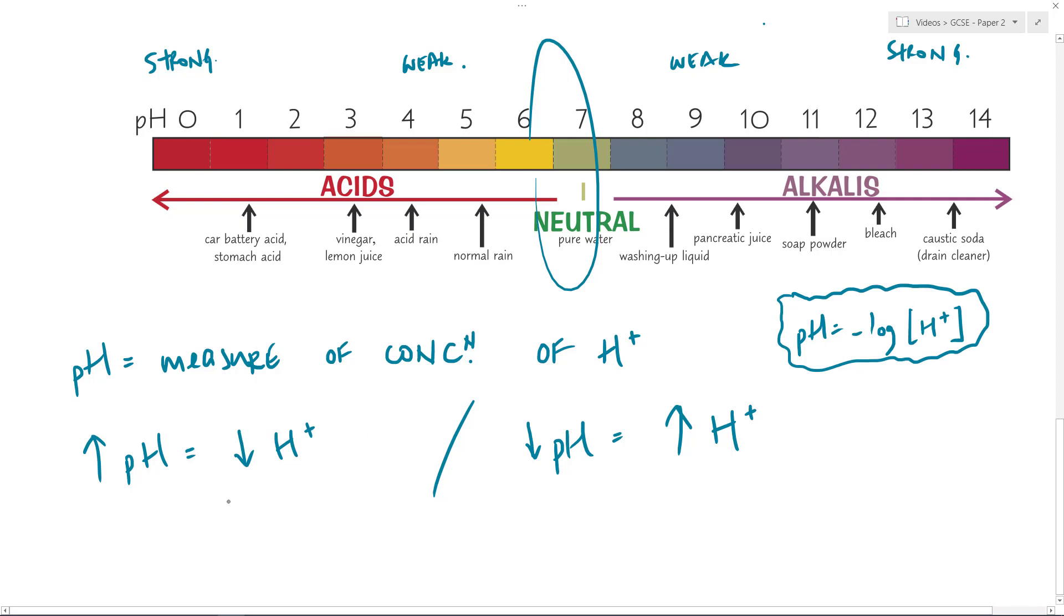So the higher the pH, the lower the hydrogen ion concentration, and the complete opposite, the lower the pH, the higher the hydrogen ion concentration. So that means at this end, we have lots of H+, and down this end, we have less H+. That's how that works.